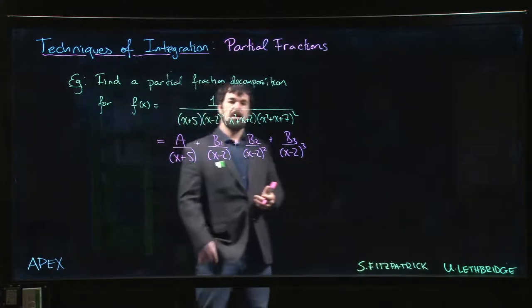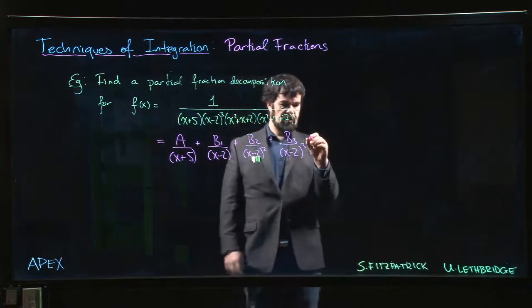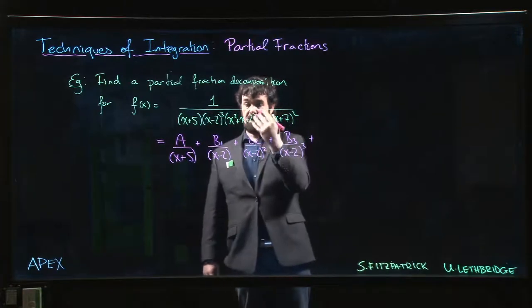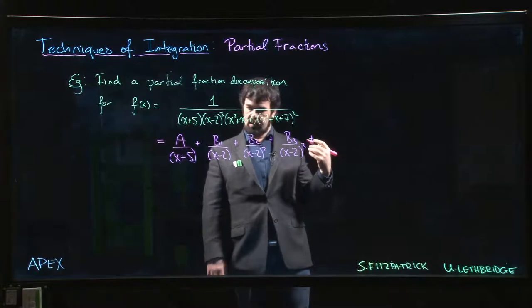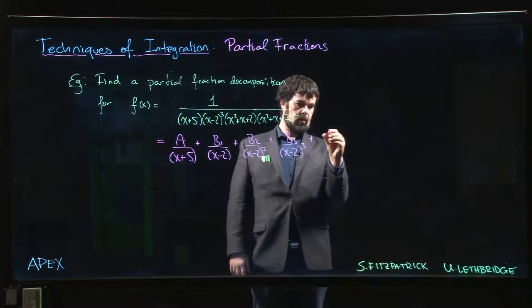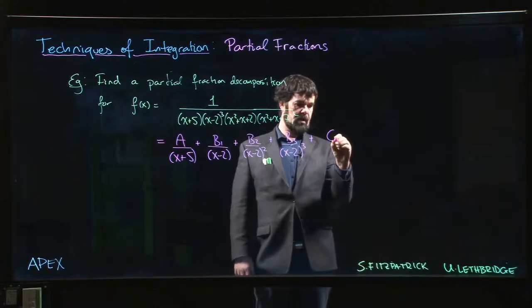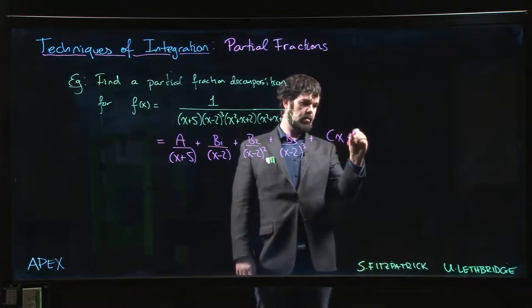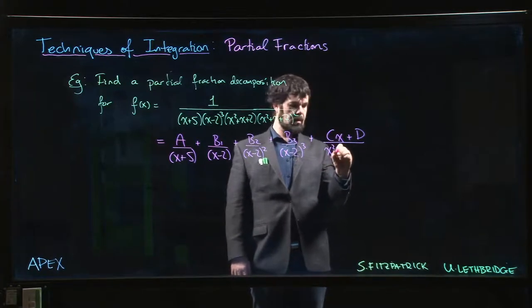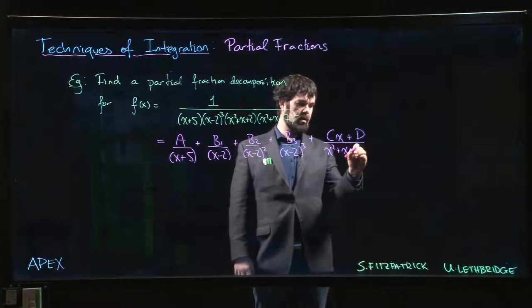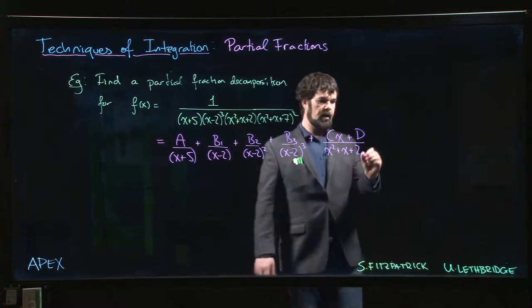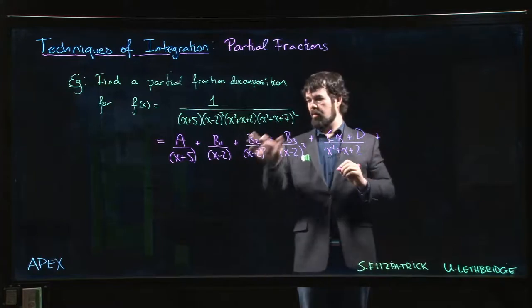Now for the quadratic, we mentioned in the introduction that for a quadratic factor you might need a linear function in the numerator. So we might have something that looks like, say, Cx plus D over x squared plus x plus 2.